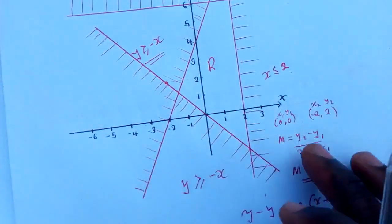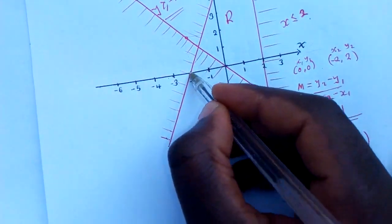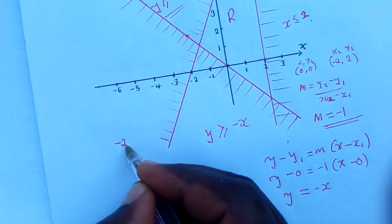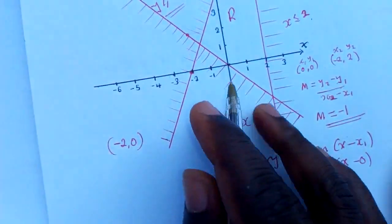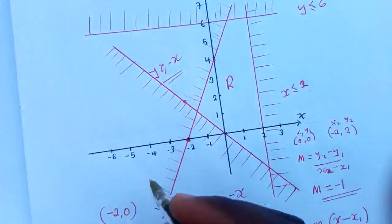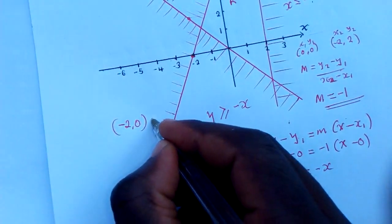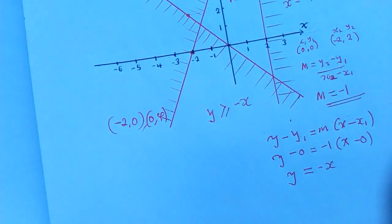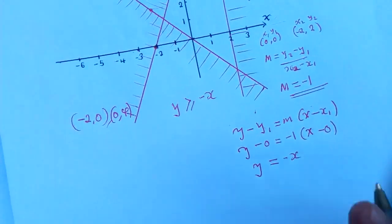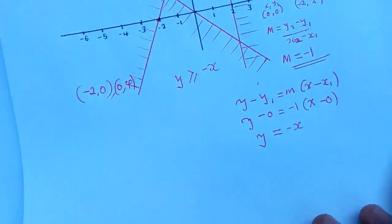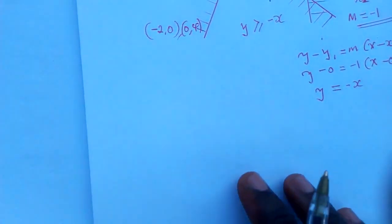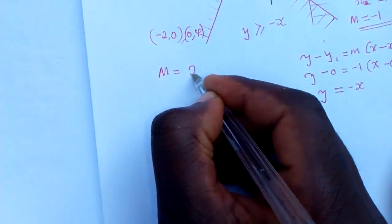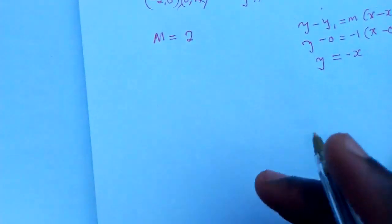We go to the next line. I can pick the coordinates negative 2 comma 0 and 0 comma 4. Using the gradient formula with these two points, you will find that the gradient m is equal to 2.